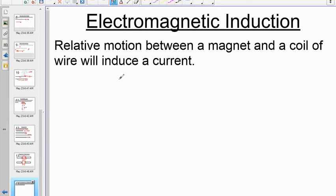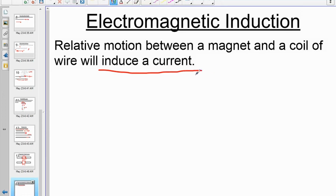Electromagnetic induction: if you move a wire near a magnet or a magnet near a wire, you get a current to flow — that's electromagnetic induction. The faster you move, the more current you get. You need relative motion between a magnet and a coil — you can move the magnet, the coil wire, or both. The wire also needs to cut magnetic field lines; following the field lines produces no current, but cutting them does.